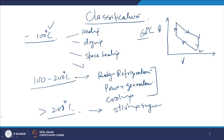In the Stirling cycle: 1 to 2 is a constant volume process, 2 to 3 is constant temperature, 3 to 4 is constant volume, and 4 to 1 is again constant temperature. The Stirling cycle can be coupled with a solar concentrator as another way of generating power. Otherwise, a solar power plant can be run using 200 degree centigrade temperature, generated by parabolic mirrors.